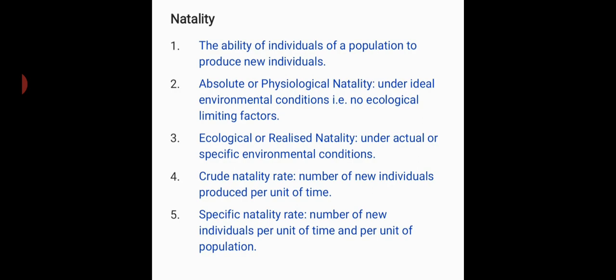Specific natality rate is new individuals produced per unit of time and per unit of population. For example, if individuals produced are 400 in number and the population size is 10,000, then the specific natality rate will be 0.04.